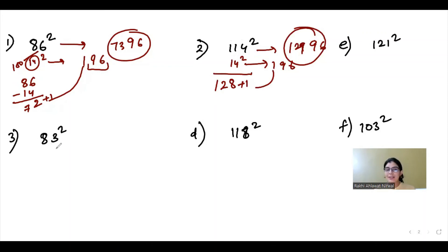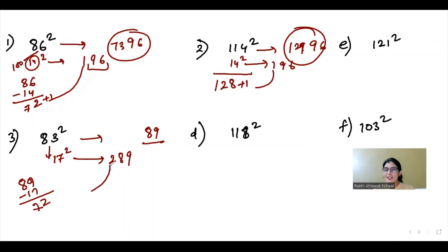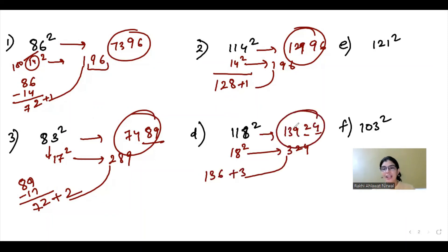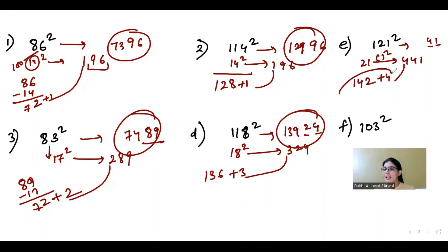For 83: the difference from 100 is 17. Seventeen squared is 289. The last two digits are 89. Since 83 is less than 100: 83 minus 17 equals 66. Carrying the 2 forward gives 68. So 83 squared is 6889. For 118: 118 is greater than 100, difference is 18. Eighteen squared is 324. Last two digits are 24. 118 plus 18 equals 136. Carrying forward gives the answer.